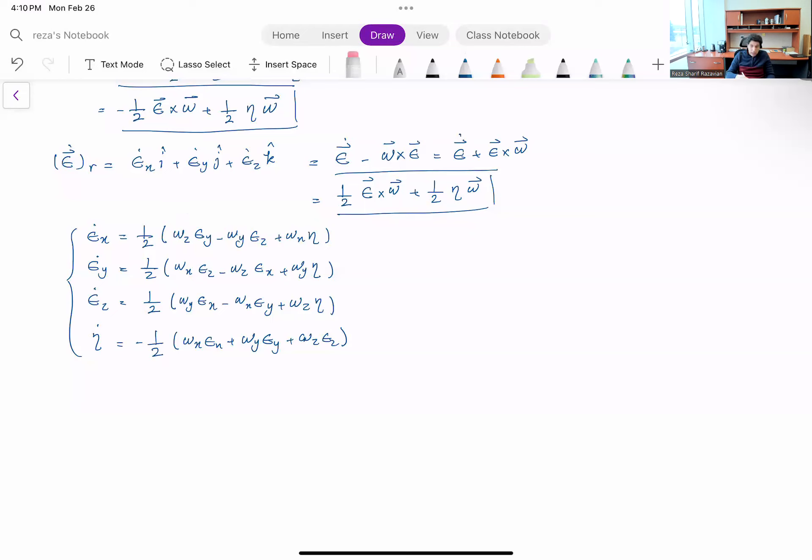And this formulation can very easily give you how your orientation is changing as time progresses. So this is something any cell phone or any wearable device does, to calculate the orientation of your device given the measurements from the gyroscope inside the device.